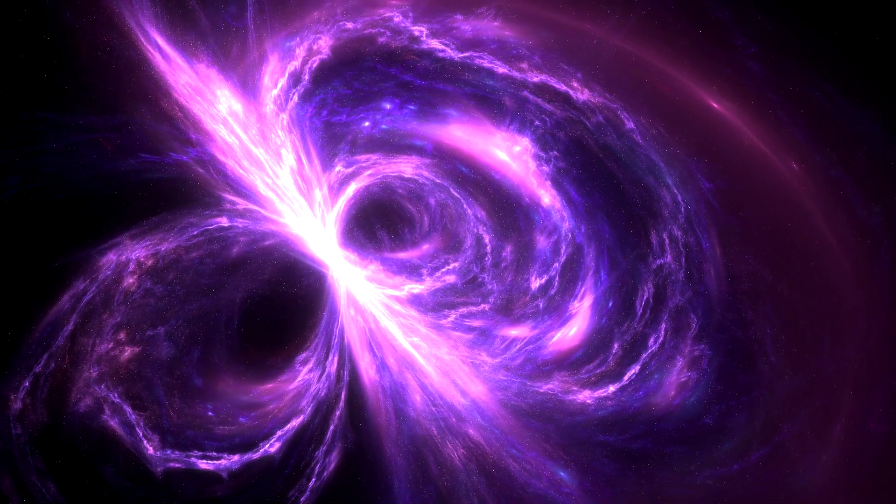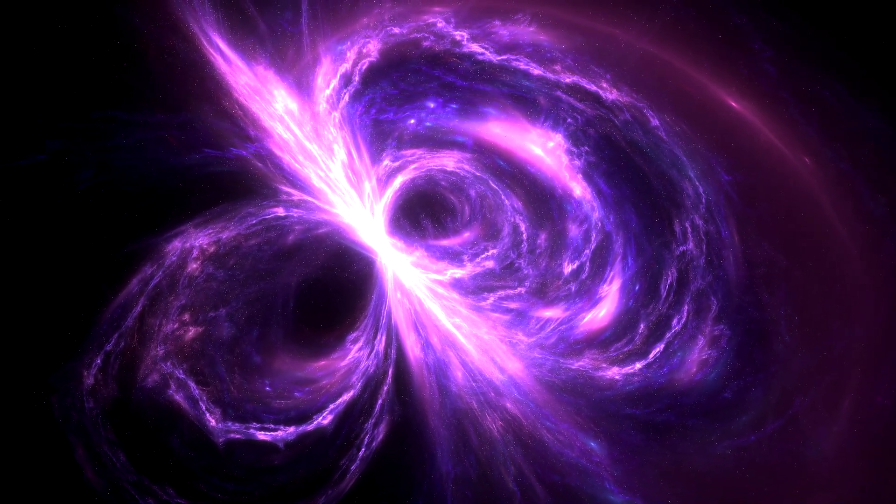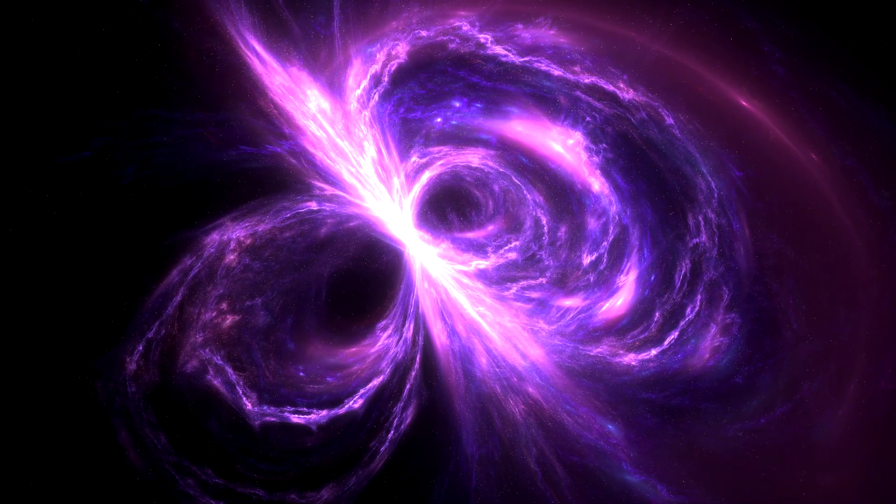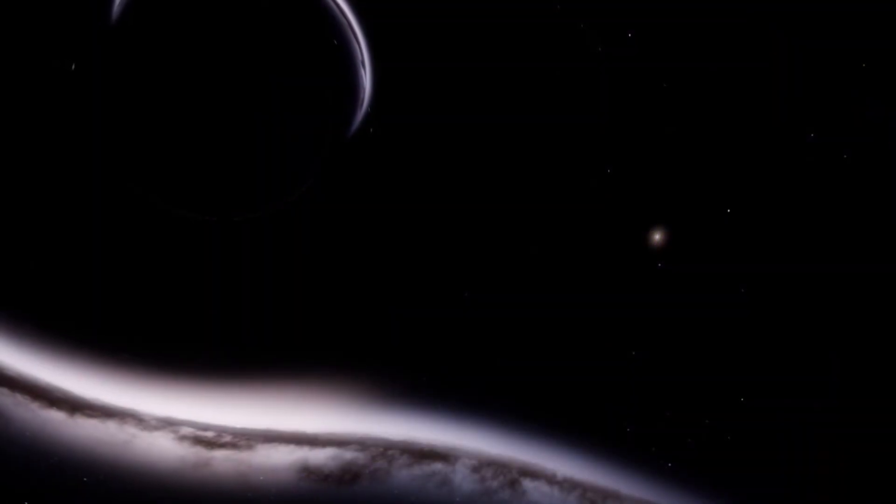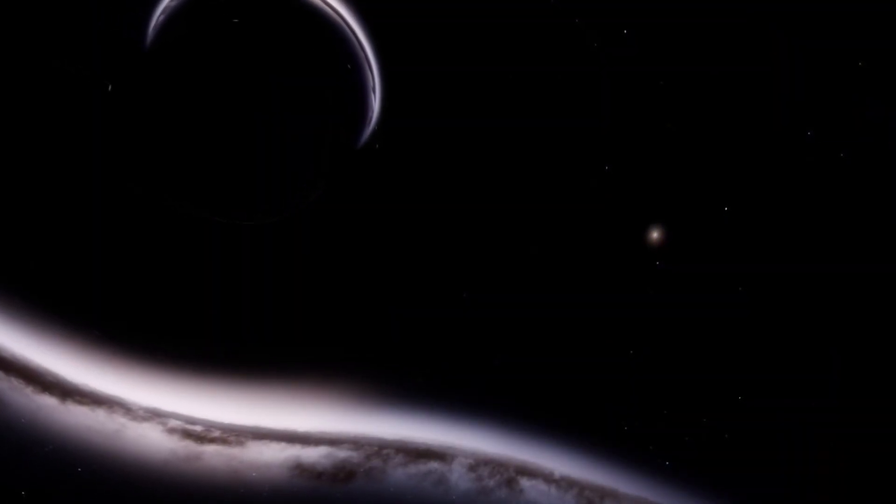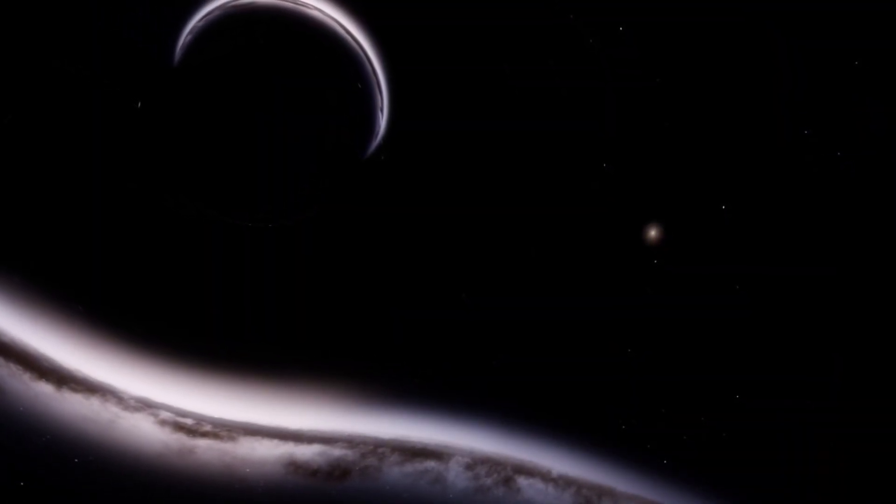The Great Attractor is a massive gravitational anomaly located in the direction of the Centaurus and Norma clusters of galaxies, approximately 250 million light-years away from Earth. Despite decades of study, the Great Attractor continues to confound scientists with its enigmatic properties.